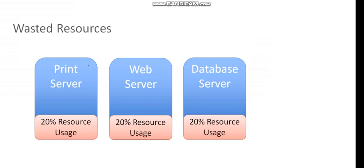By stranding resources on a physical host that can only run one operating system, we have two choices. We could start installing other applications on our print server, making multiple applications run on the same server. But that opens up a whole different can of worms, because now if I need to reboot this print server, I have to think about what else is running on it and what else I'm going to impact. I start creating all of these interdependencies on the same hardware, and that's not a good thing.